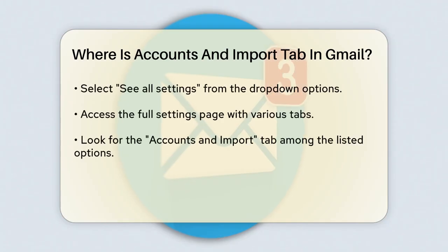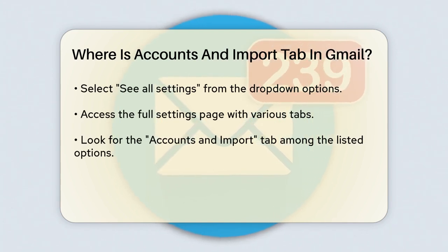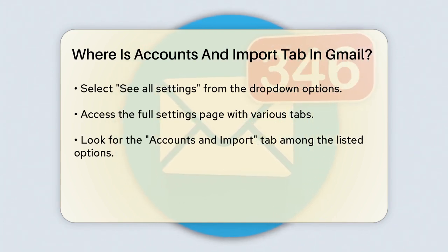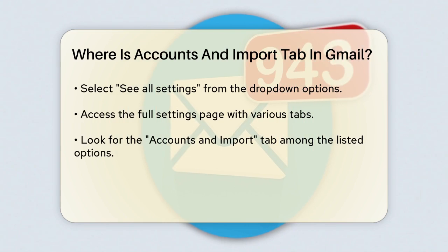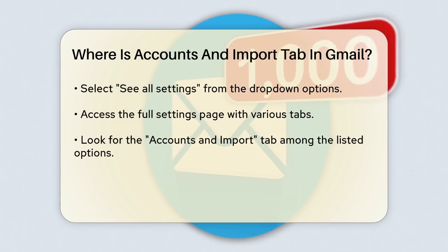Look for the gear icon in the top right corner of the Gmail page. This icon is your gateway to the settings menu. Click on it and a drop-down menu will appear.